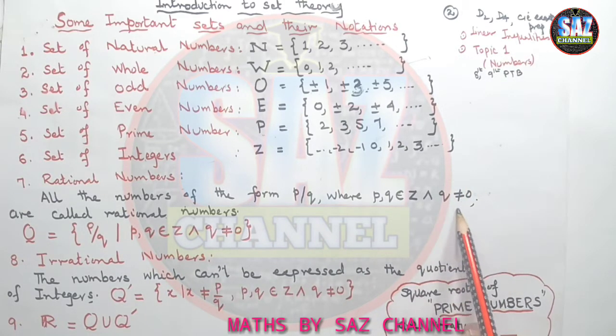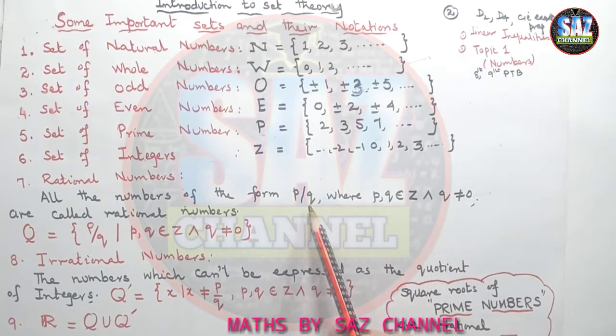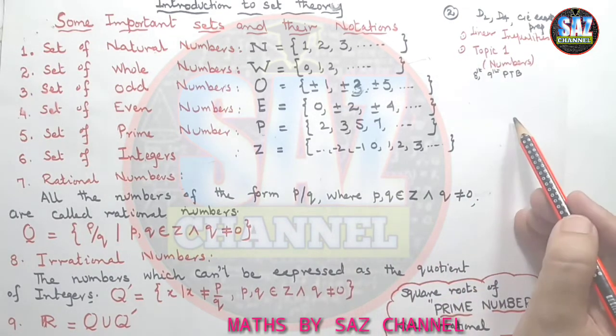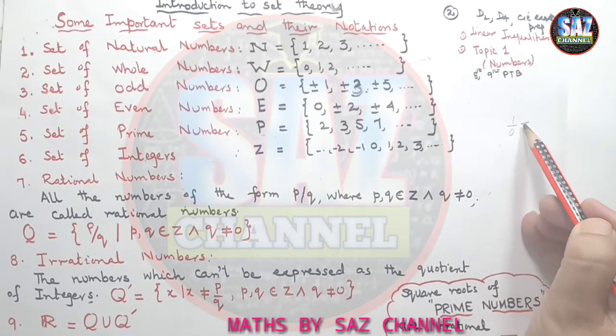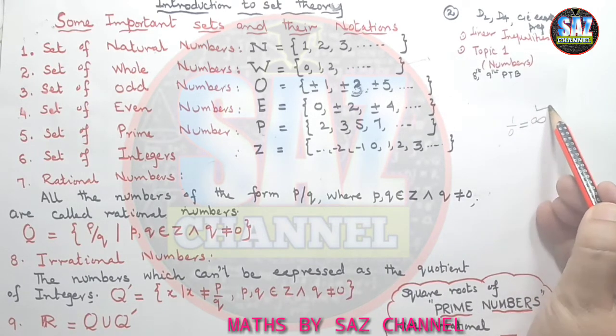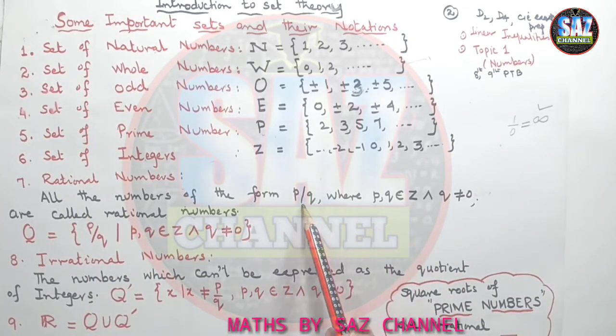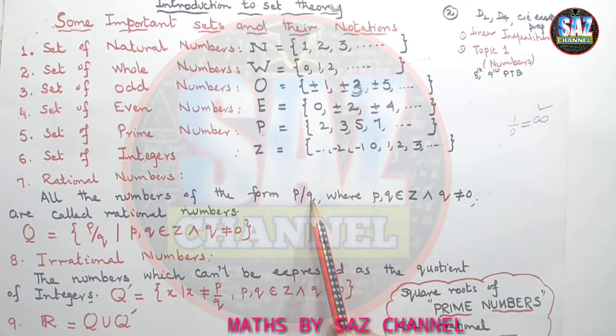Here, it is important to understand why q which is the denominator is not equal to 0. When I am making the denominator equals to 0, my answer comes infinity and which is not reachable. So for the rational numbers, it is important the denominator should not be equal to 0.